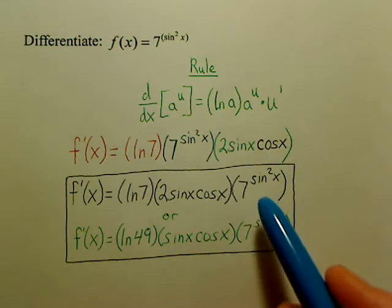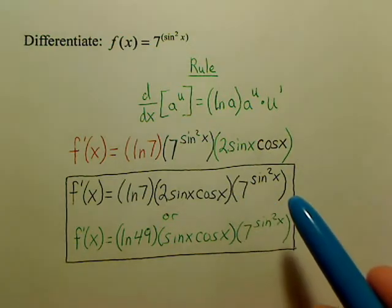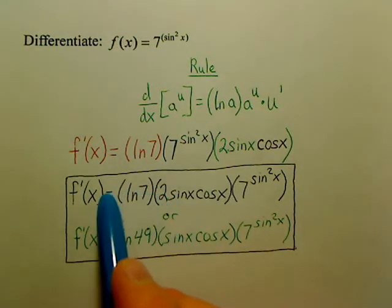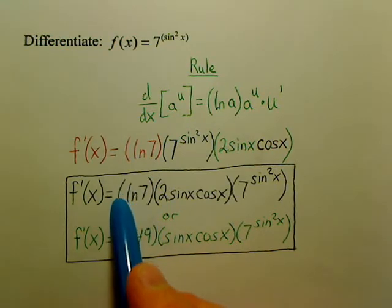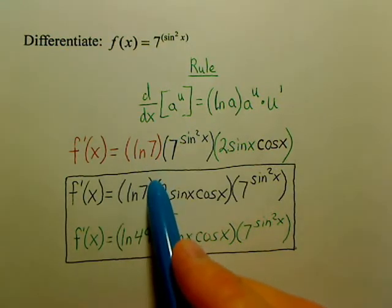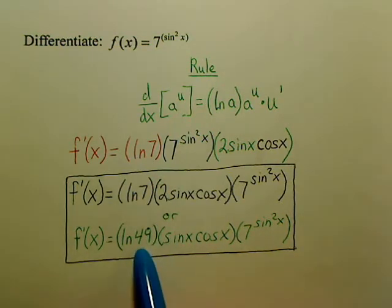There's one more step you might be able to do. This 2 can actually go in front of the ln 7. Due to log properties, you can take that 2, bring it up, make it 7 squared, and 7 squared is 49.